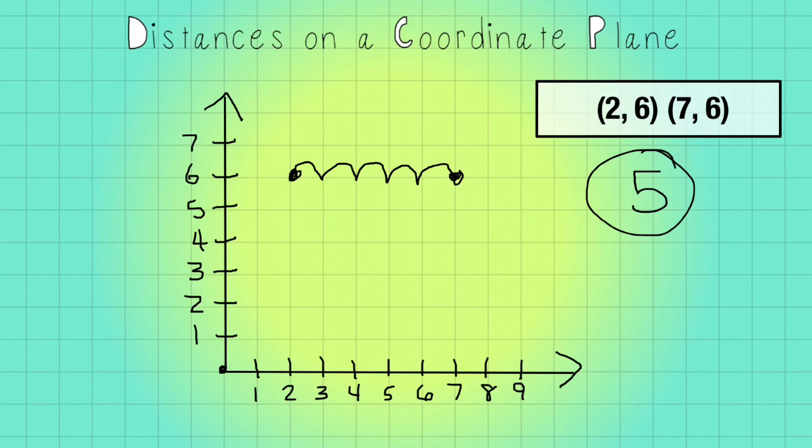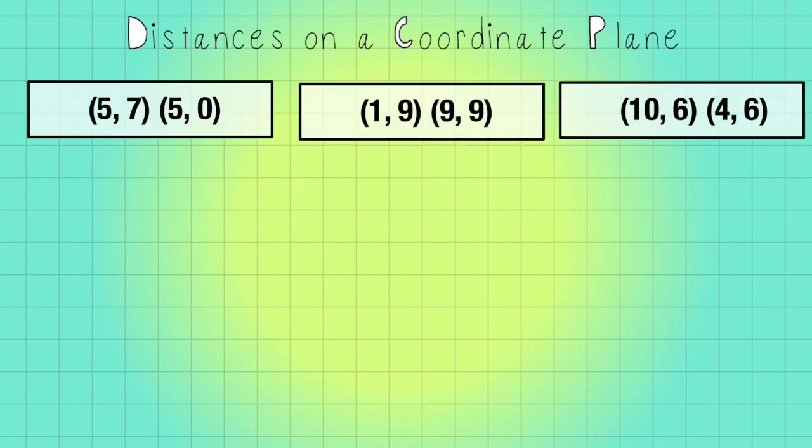But what happens if you don't have that coordinate grid in front of you? Is there an easier way? Well, let's look. I have some different ordered pairs here that we're going to be able to find the difference of.